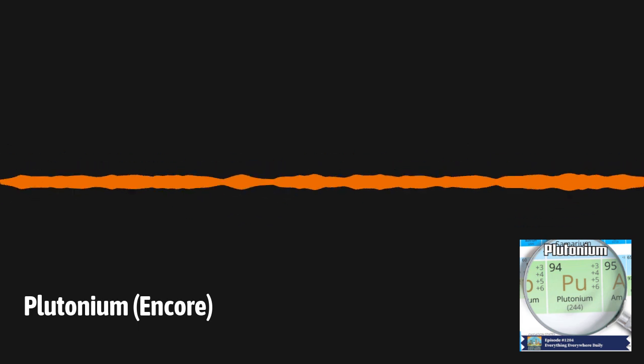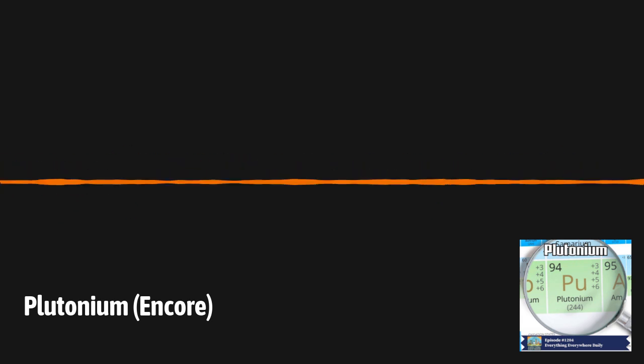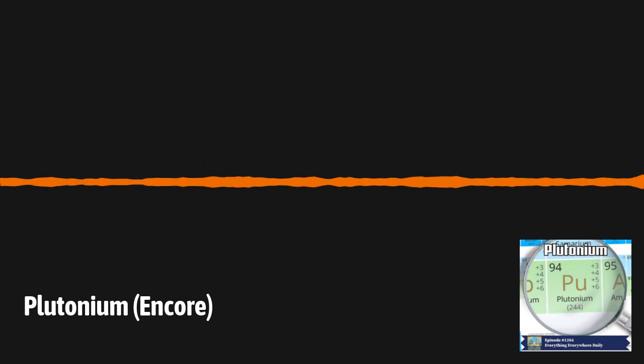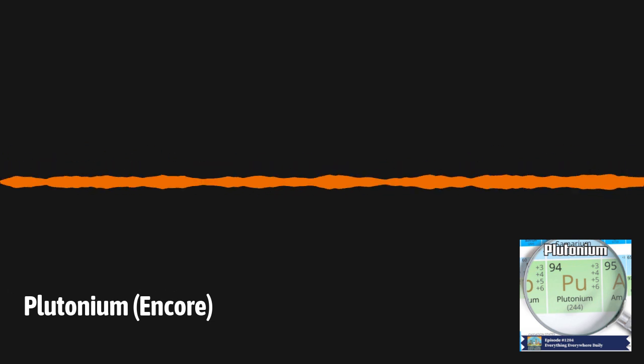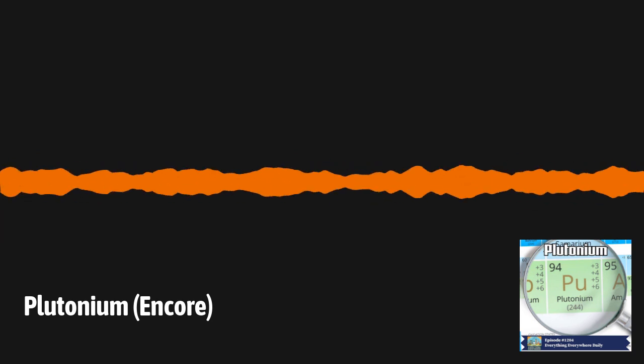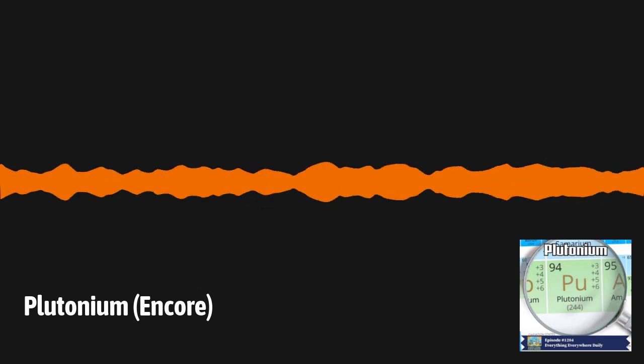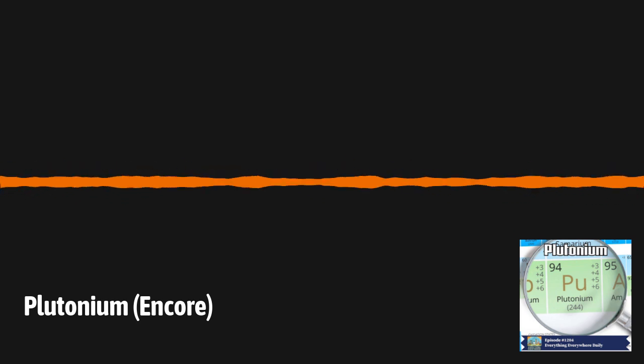As I mentioned in the introduction, plutonium isn't considered to be a naturally occurring element. However, that isn't 100% true. There are actually extremely small amounts of naturally occurring plutonium on Earth. A study published in May of 2021 found an extremely small trace amount of plutonium on the ocean floor, which was believed to be residual from the formation of the solar system. Likewise, there's also very small amounts that are created through the natural radioactive decay of uranium.